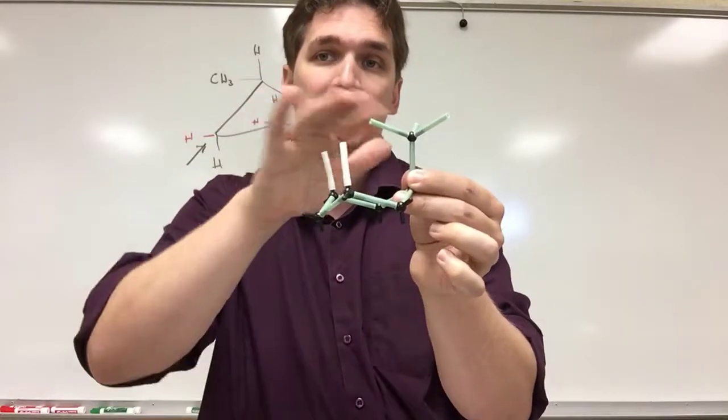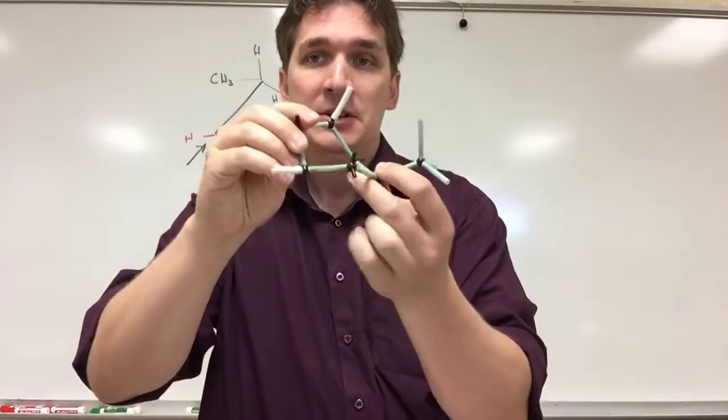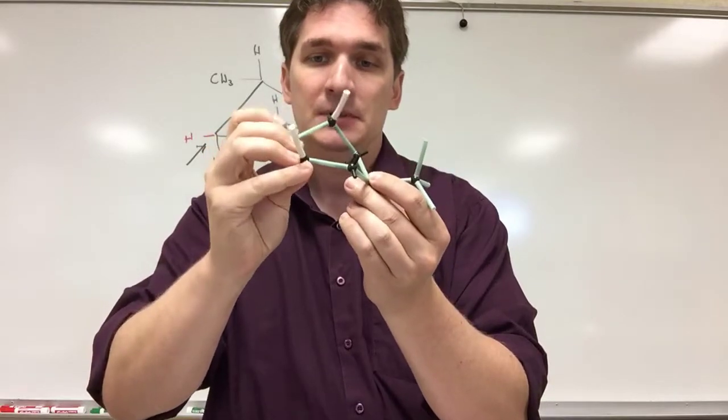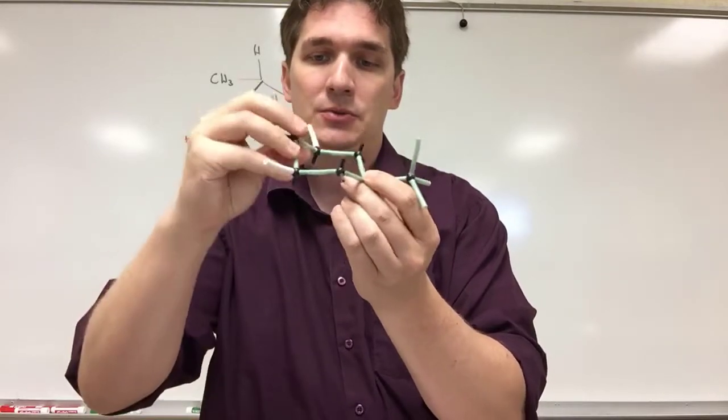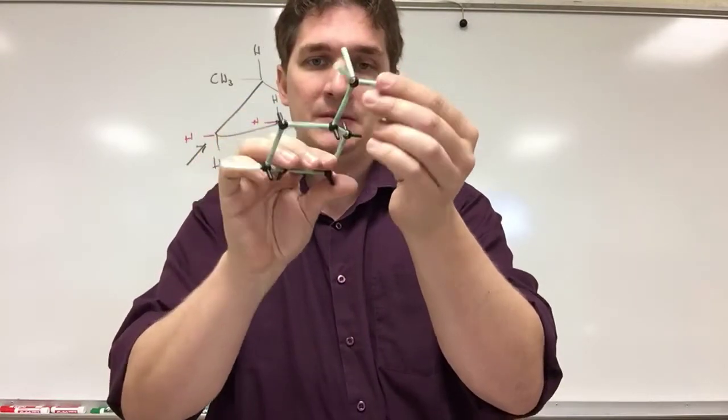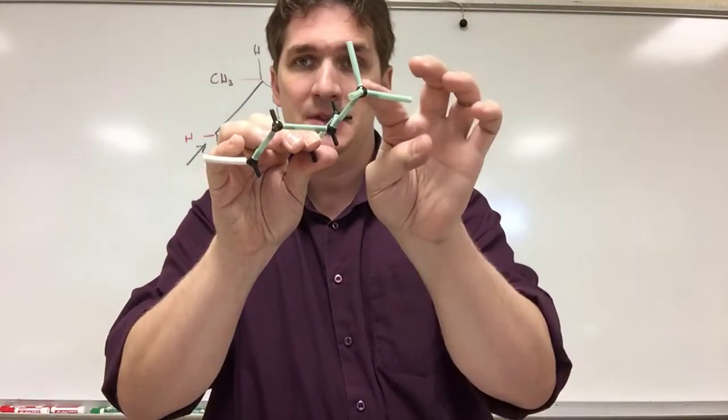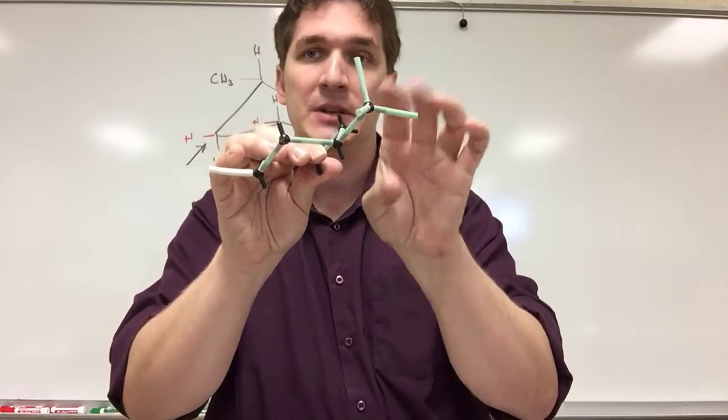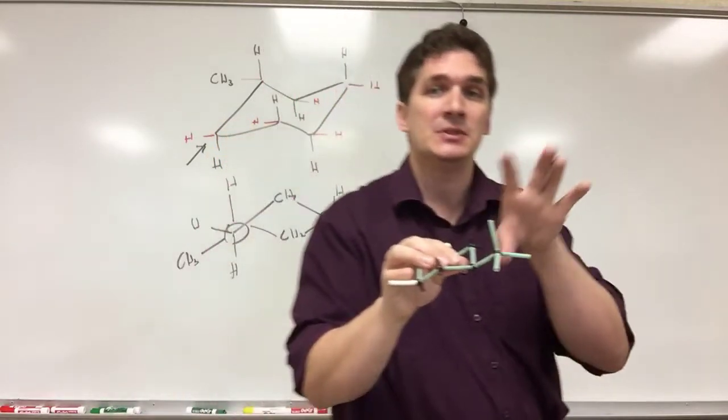We put a methyl group up here, it's gonna interfere with the other axial atoms. So if we flip our conformation, and we go put it equatorial, even though we're still gonna have this group relative to this group of 60 degrees, that gauche conformation helps reduce the energy quite a bit.